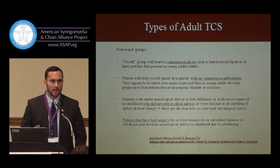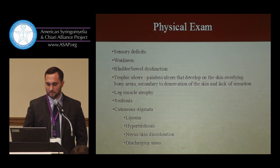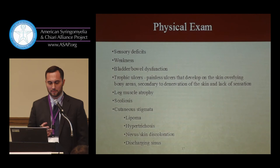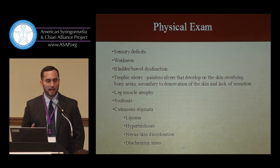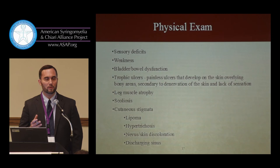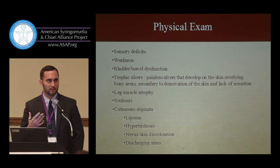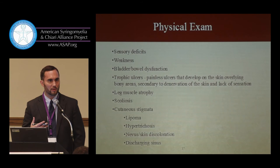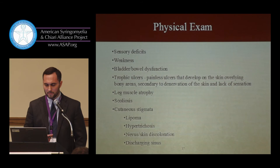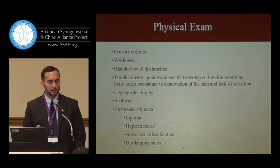On physical examination, you often see sensory abnormalities, weakness, bowel and bladder incontinence, and trophic ulcers — ulcers that develop over bony prominences due to abnormal or absent skin innervation, similar to diabetic ulcers. Patients can have leg muscle atrophy, scoliosis, and a whole host of skin markings including hairy patches, stains, and discharging sinuses.